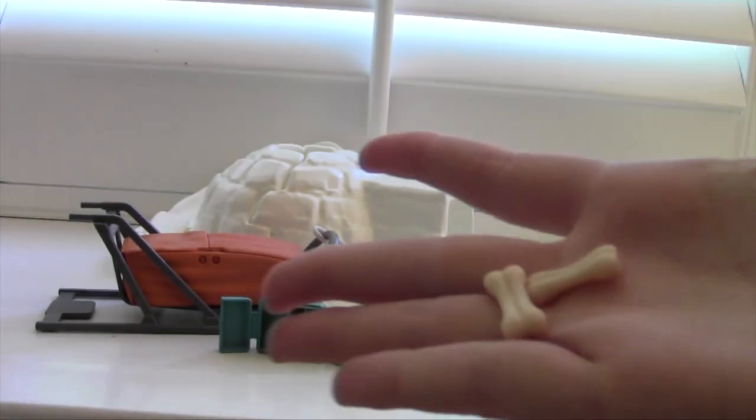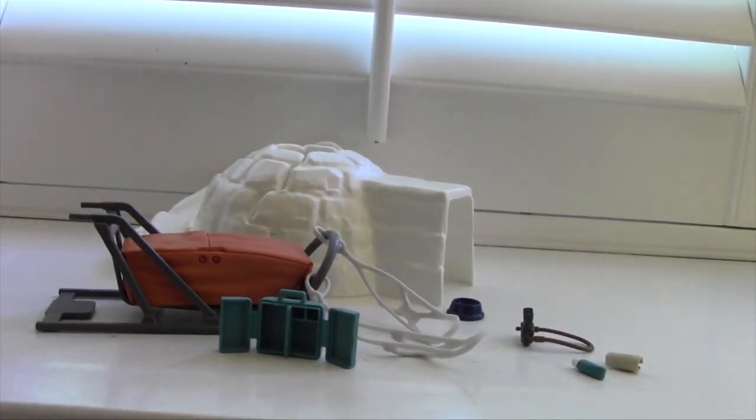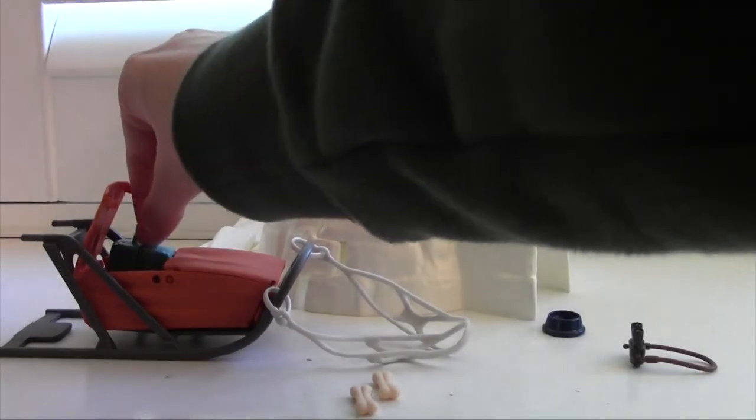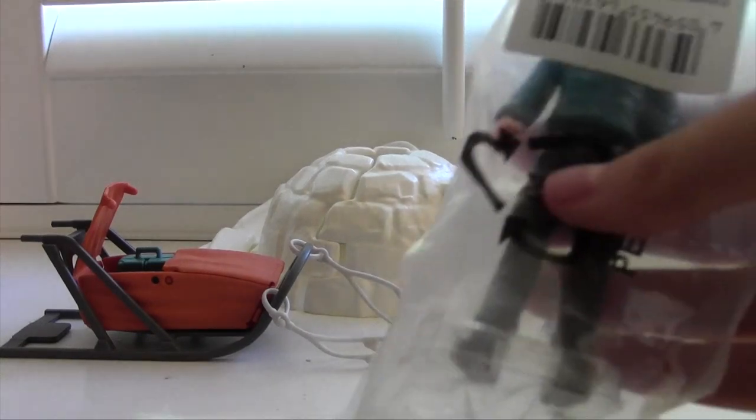The last accessory we get are two dog bones. I forgot to mention earlier that there are stickers you can put on the little vet set and we'll just put that in our little sled for later. All right, now it's time for the really exciting stuff. This is my first human figure so I'm going to be opening him up.